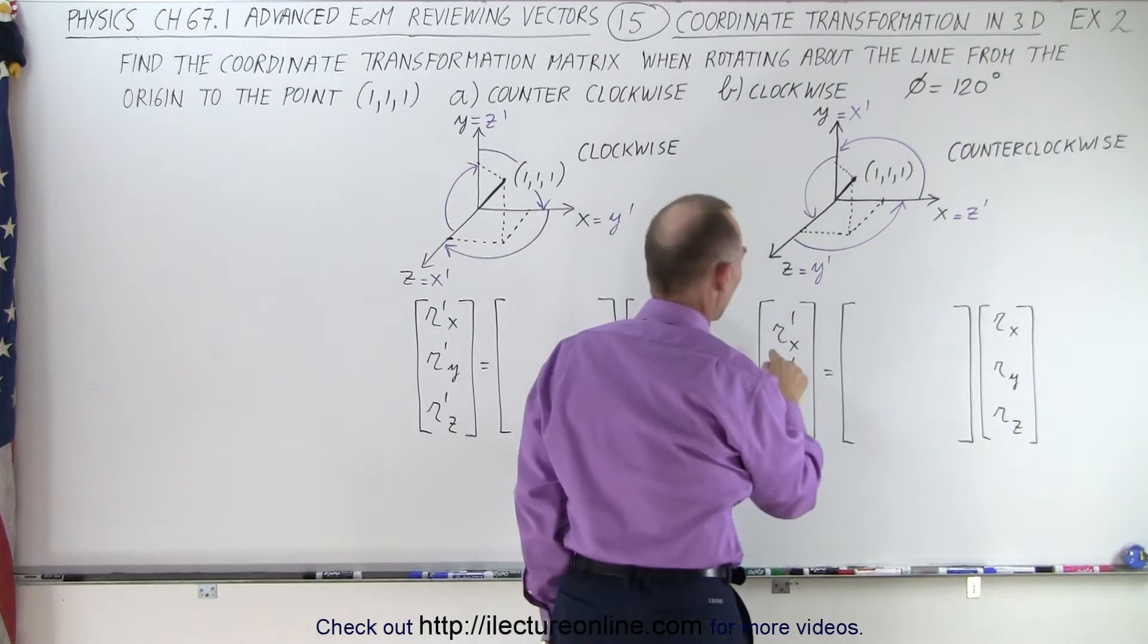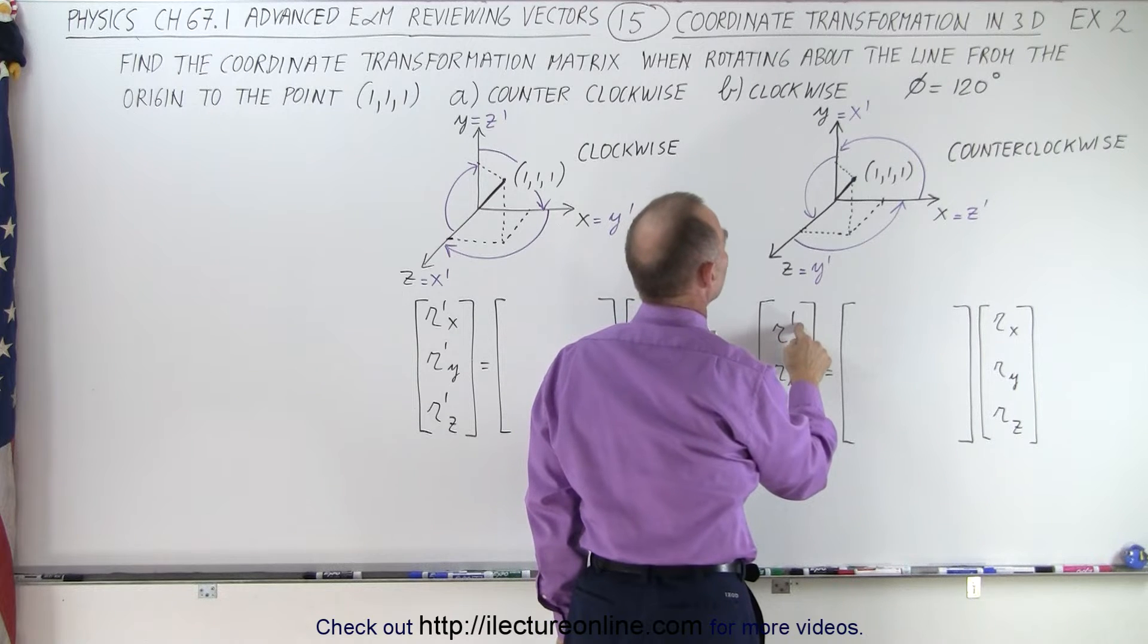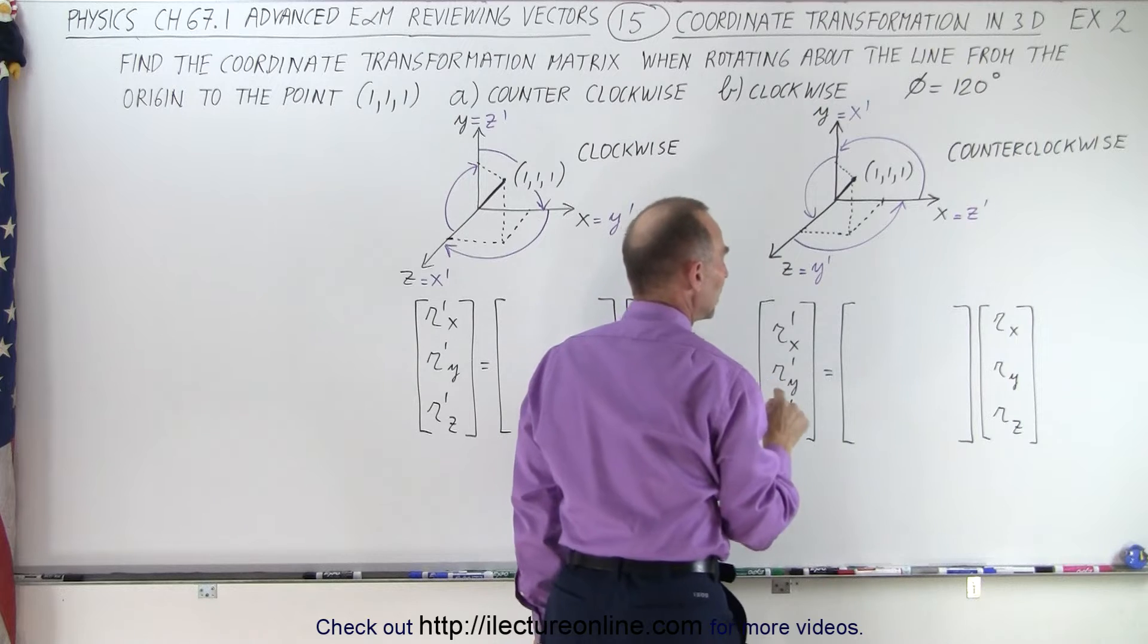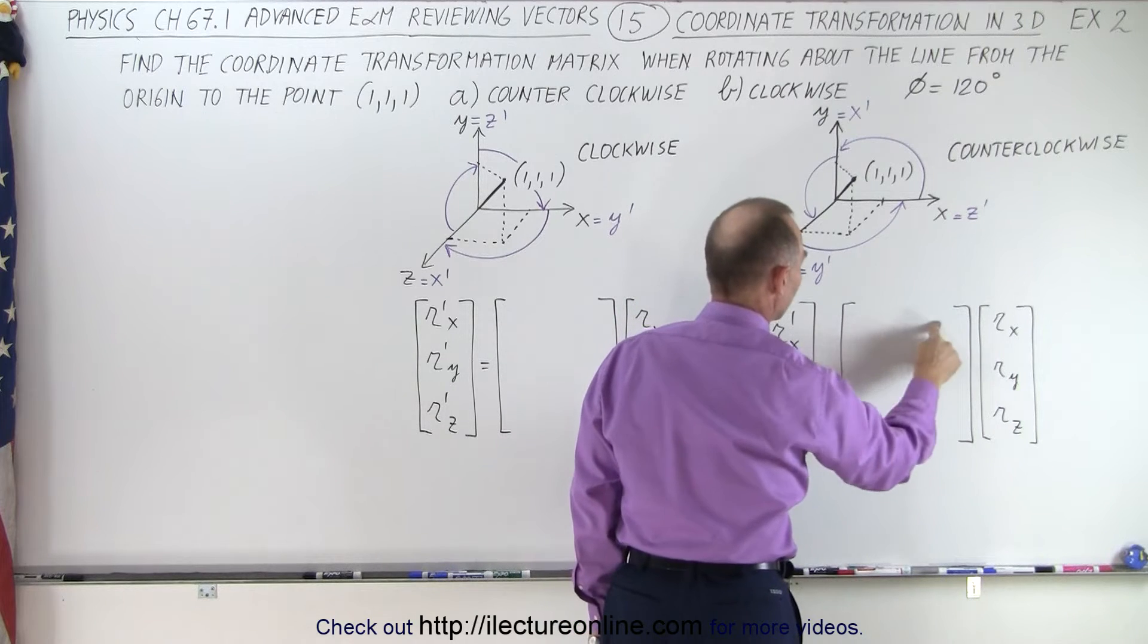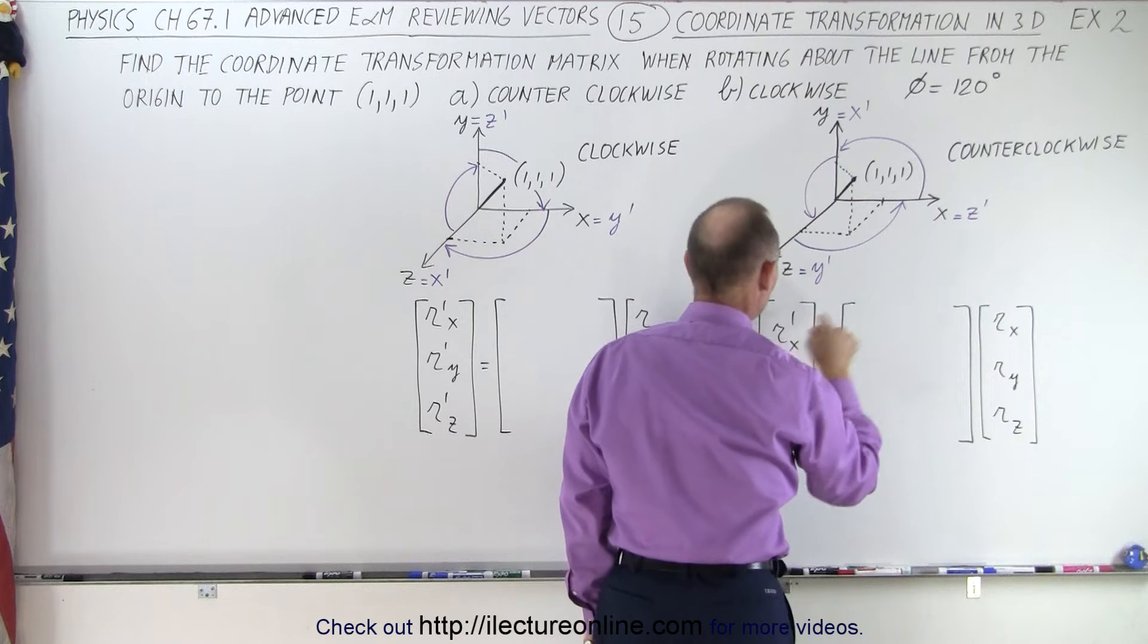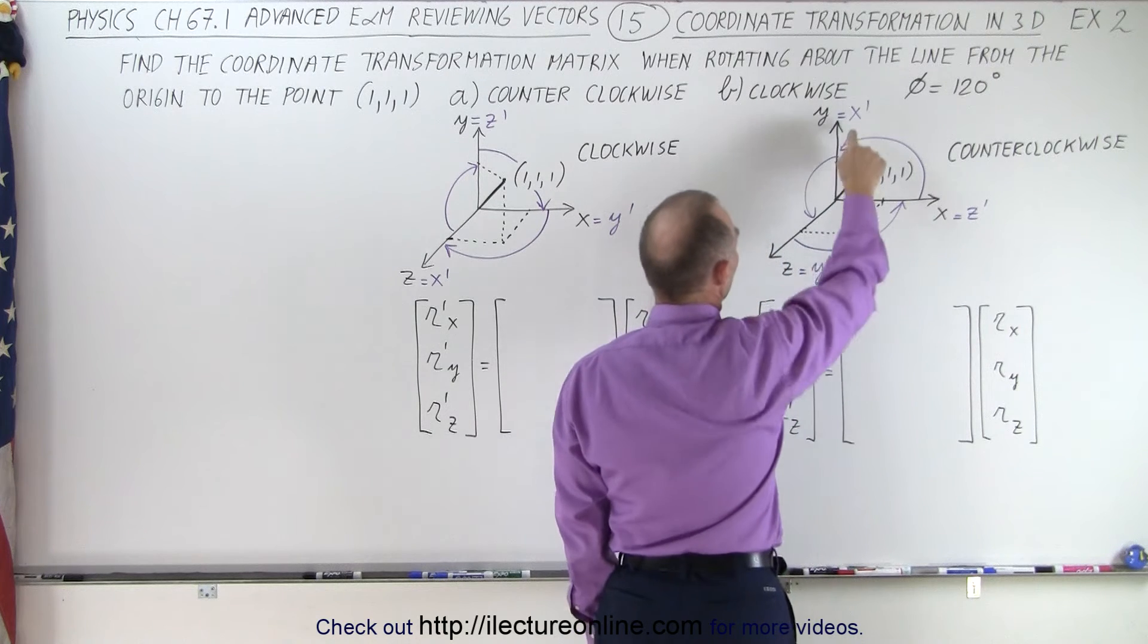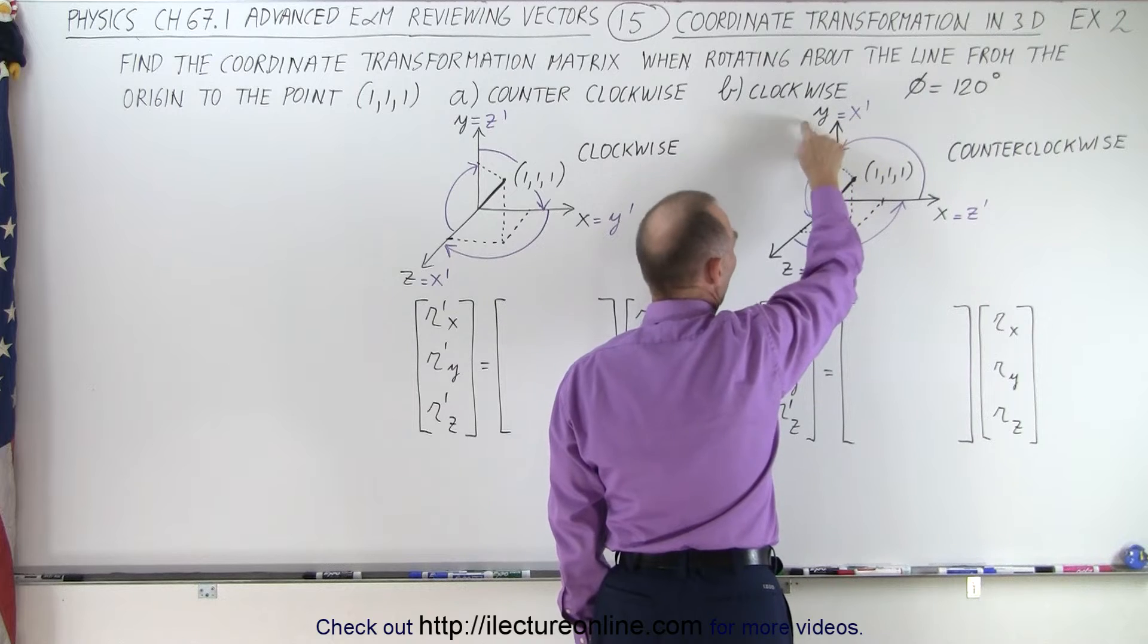If we're going to let RX prime, right here, equal the Y axis, then we need to have something in here that will multiply this times this to give us this. So how can we do that? We want RX prime to be equal to RY.